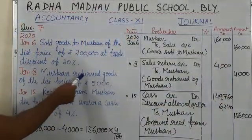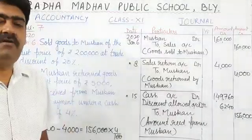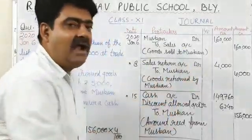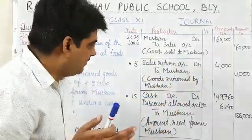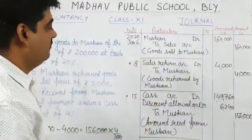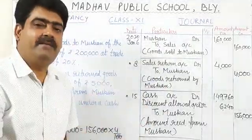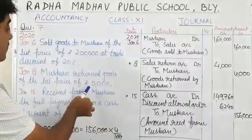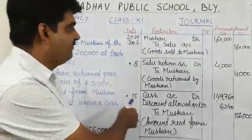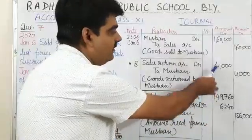Next transaction: Muskan returns goods of the list price of rupees 5,000. This is our sales return. Muskan is returning goods to us, so sales return account is debited and Muskan, the giver of goods, will be credited. Remember that trade discount will be adjusted at the time of sales return also. List price was 5,000 and trade discount is 20%, so 20% of 5,000 is 1,000. 1,000 rupees will be deducted from 5,000, so the amount will become 4,000.